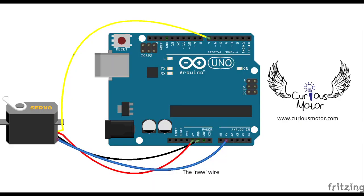To test it, you can hook up the servo as usual with the new wire connected to an analog input pin.